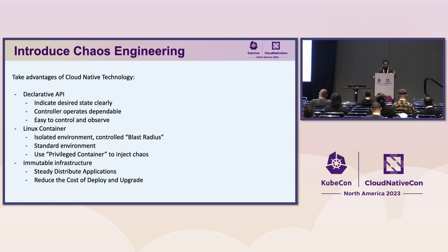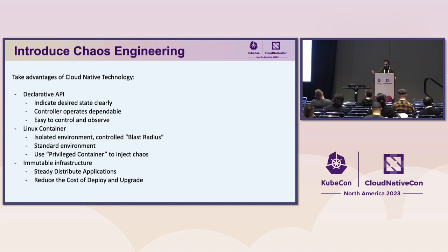The popularity of Linux containers allows applications to run in isolated environments, making it easier to minimize the blast radius when doing chaos in production. The standardization of the Kubernetes container runtime makes fault injection more smooth and universal. You can also use a privileged container to perform node-level chaos in the Kubernetes ecosystem.